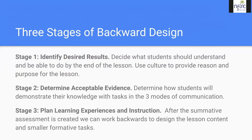Dr. Eddy talked about the three stages of backward design. In stage one, we identify desired results — what students should understand by the end of the lesson, using culture to provide reason and purpose. In stage two, we determine acceptable evidence — what tasks will show students have learned, leveraging the three modes of communication. This is also where we plan the big summative assessments. In stage three, we plan the learning experiences and instruction — working backwards from the summative assessment to design lesson content and smaller formative tasks.